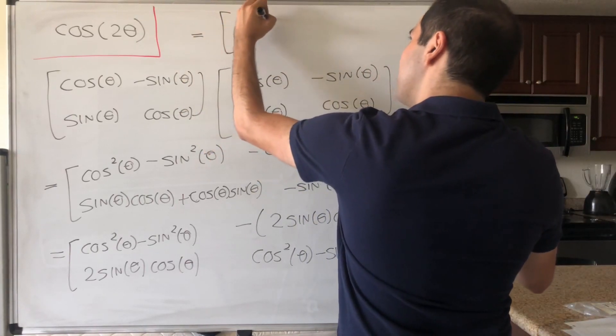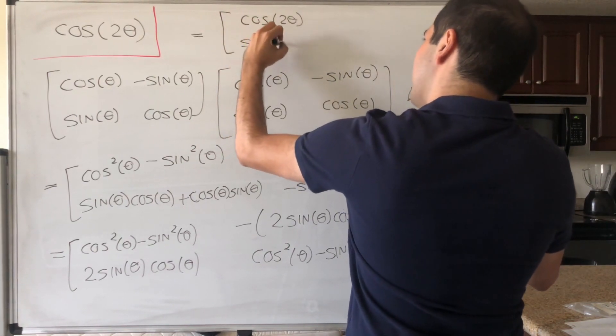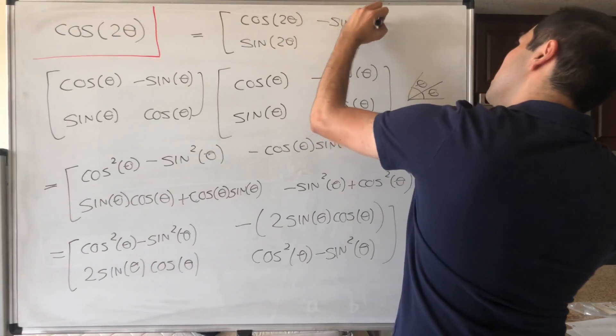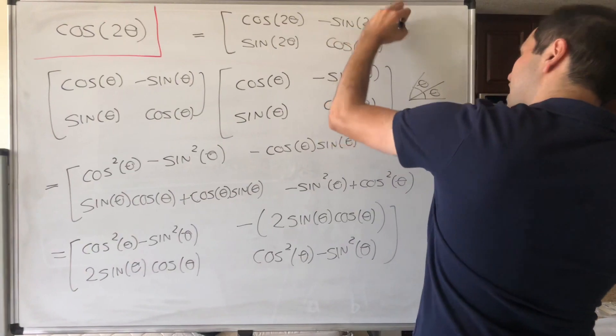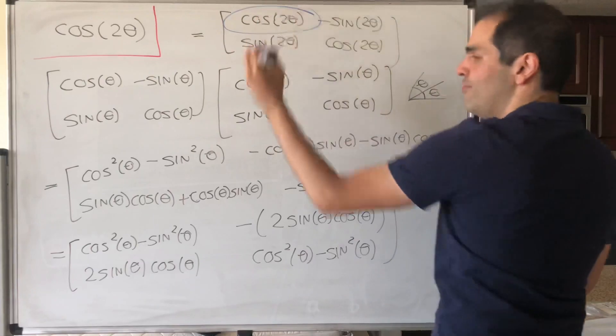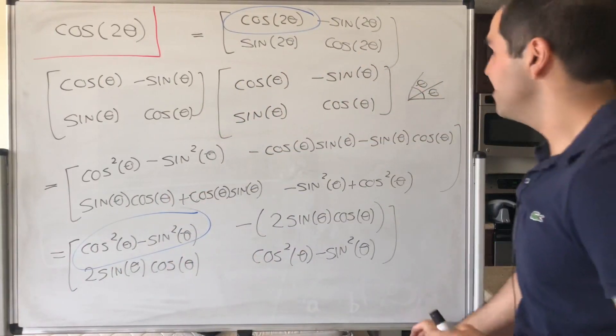should just be rotation by two theta. So cosine of two theta, sine of two theta, and then minus sine of two theta, and then cosine of two theta. And well, if you just compare the entries, what you get, in fact,